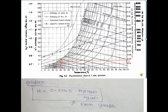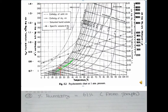In your examination, there is no need to paste the graph. Instead, take the reading from the graph and mention the data as 'from the graph' in your exam paper. Next, the second property: percentage humidity. To read percentage humidity, the first step is to draw a vertical line from the DBT axis at 25 degrees Celsius.